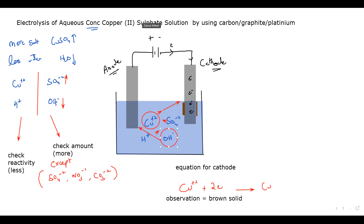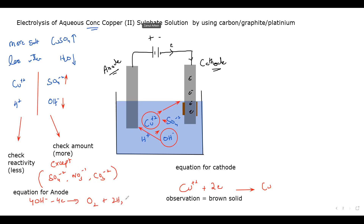Since sulfate cannot move, the ion that moves to the anode is the hydroxide ion. There is a fixed equation for hydroxide ion at the anode: four hydroxide ions lose four electrons, turning into oxygen gas and two water molecules. Whenever oxygen gas or hydrogen gas is produced, the observation is bubbles, so you will see bubbles forming at the anode.